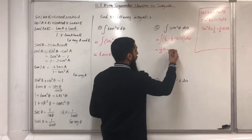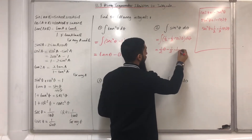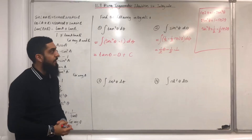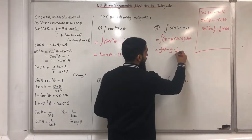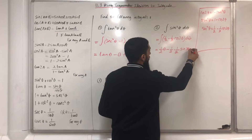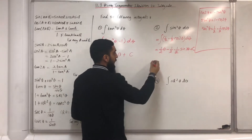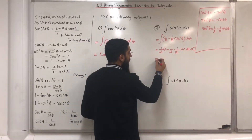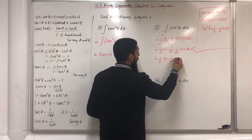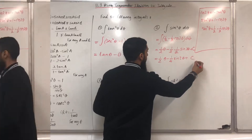The integral of one half cos 2 theta: I write one half multiplied by 1 over the coefficient of theta, which is 2, giving sin 2 theta plus c. I can simplify this to write one half theta minus one quarter sin 2 theta plus c, the constant of integration.